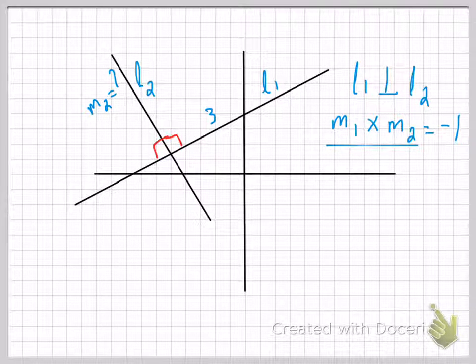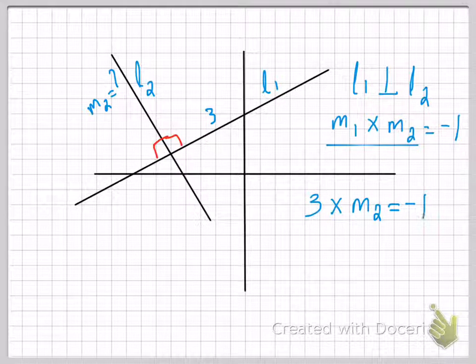You already know the slope of line one, which is three, but you don't know the slope of line two. Let's call it M2. Since they're perpendicular, their product will be minus one. Let's make M2 the subject. I'll have to divide both sides by three. So M2 will be equal to minus one upon three.